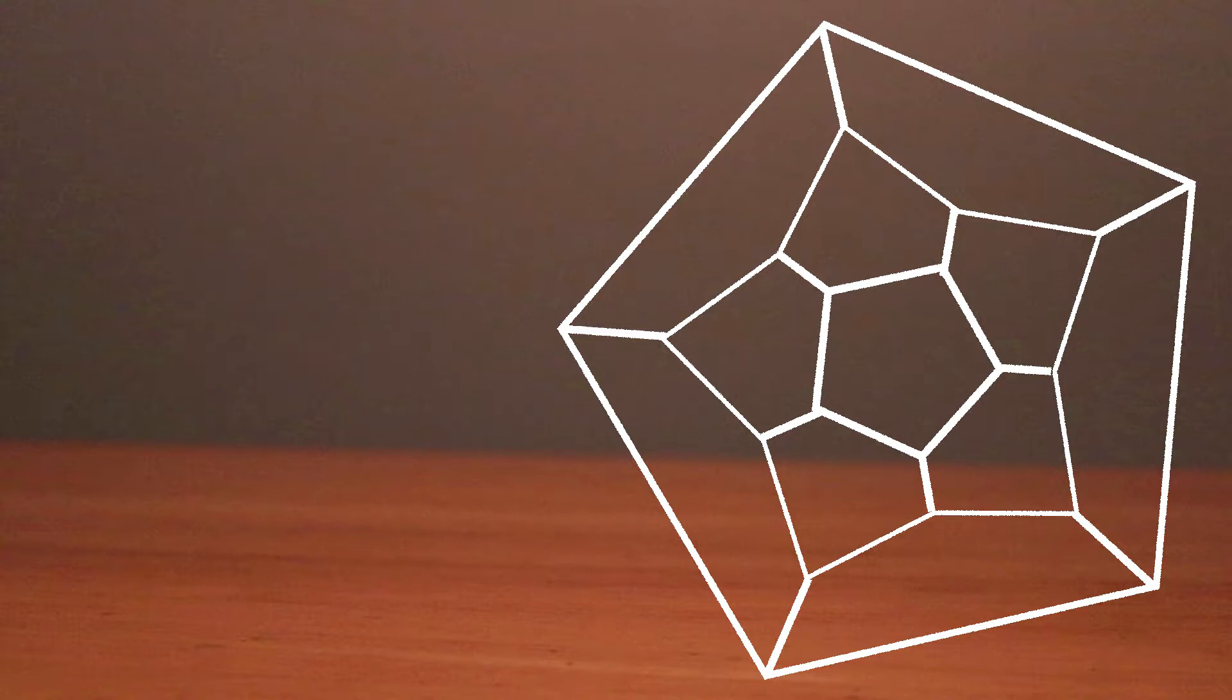It turns out to be pretty easy to find a Hamiltonian circuit on this graph. The dodecahedron has three edges coming out of each vertex, and we only need two edges coming out of each to create our circuit. So here's one way to do it.